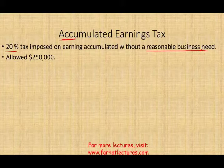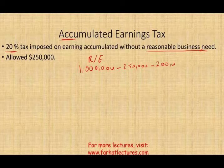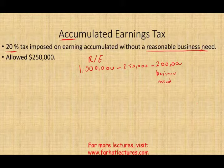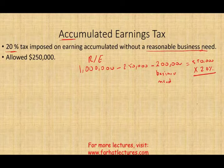Let's walk through some numbers. Assume the company has a million dollars in retained earnings. Of that million, $250,000 is allowed by the government — no worries there. Then assume another $200,000 qualifies as a legitimate business need. What's left is $550,000, and the government says you must pay 20% tax on that $550,000. Once you pay taxes on it now, you no longer pay taxes when you take it out later, because the government wants their money now rather than waiting for you to distribute it.